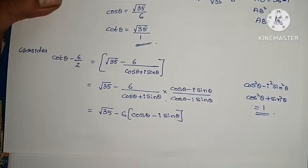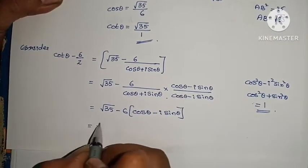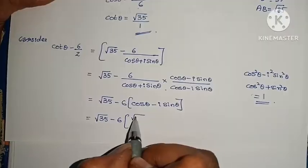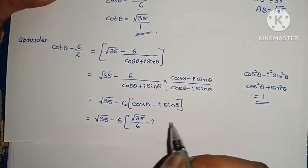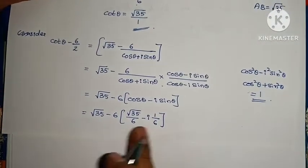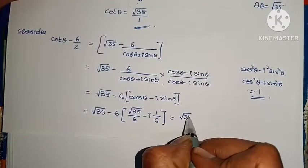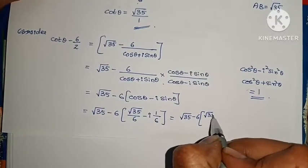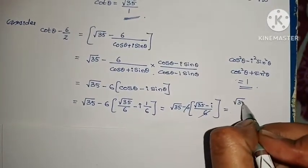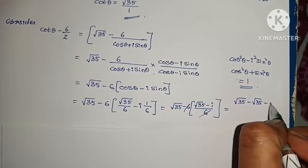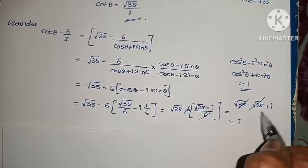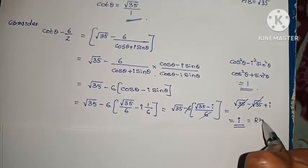Substituting cosθ = √35/6 and sinθ = 1/6 into the expression: the denominator gives 1. We get (√35 − i)/6 in numerator terms. After multiplying out: −√35 × (−1) gives +√35 terms that cancel, leaving just i. Therefore LHS = i = RHS.